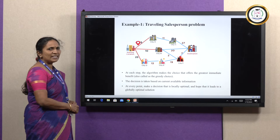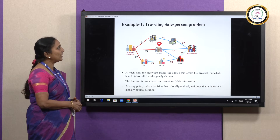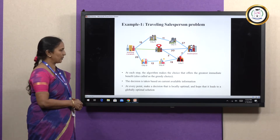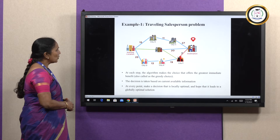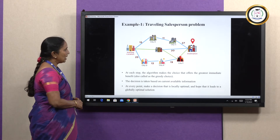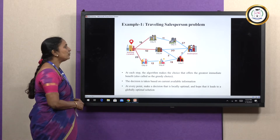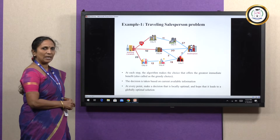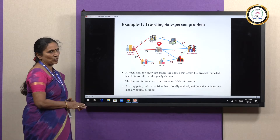The decision is made based on the current information, and we do not worry about what will happen in the future. At every point, we make a decision that is locally optimal, and we hope that it will give a globally optimal solution in future. In this case, from the starting location, if we come to city B and city F and reach the destination, we will be able to reach the destination with minimum cost. So, that is the final optimal solution.